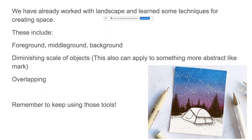Overlapping is going to be a great tool for creating space. If we look at the Jen Aranyi painting in the bottom, we see our tent is overlapping our trees, so our foreground is overlapping our middle ground. And those trees, of course, are overlapping the background of the sky. We do see some diminishing scale in the middle ground of the trees as well. All those things are going to help to create space.